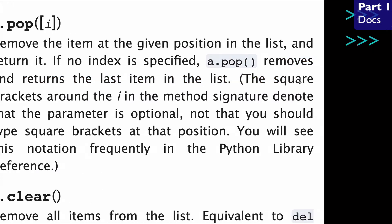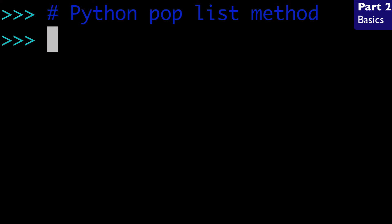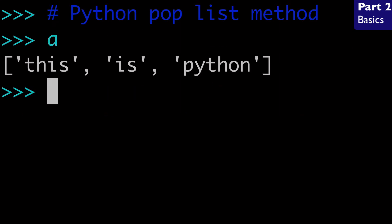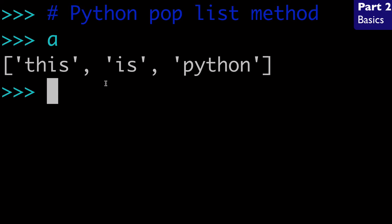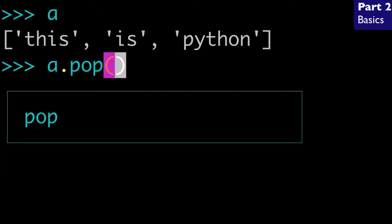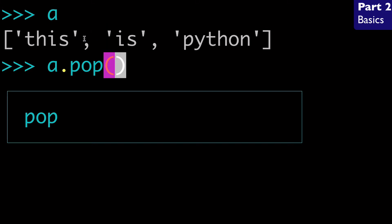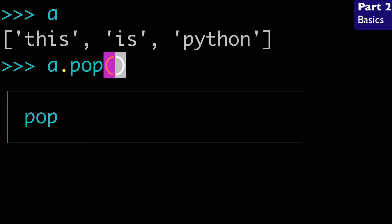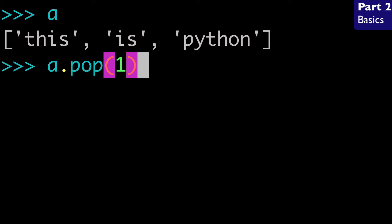Let's move over to the terminal and check things out. I went ahead and created a list called a, and this list contains three strings: "this", "is", and "Python". Let's say we wanted to remove "is" from this list — the second string. We would do a.pop and pass the index of that item. "is" is at index one because lists start at index zero, so this is index zero, is is index one, Python is index two.